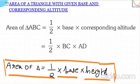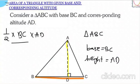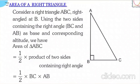In this case, if we have triangle ABC where BC is the base and AD is the altitude, the area will be half of BC into AD. You can also use this formula in reverse — if base and area are given, find the height.